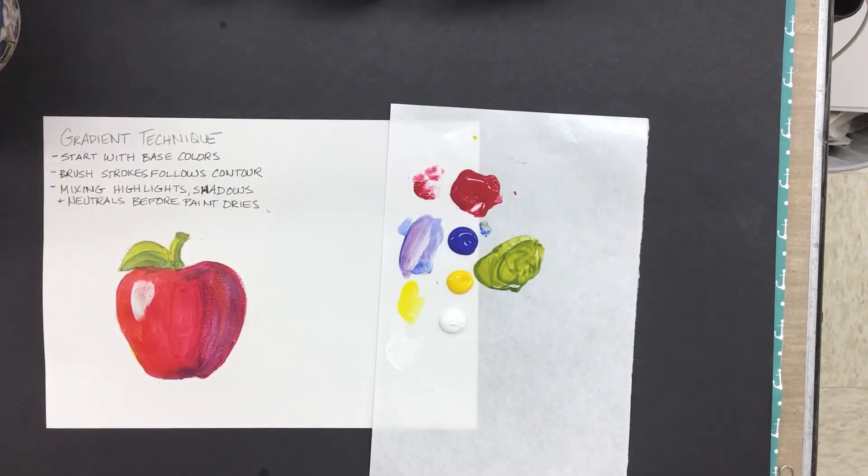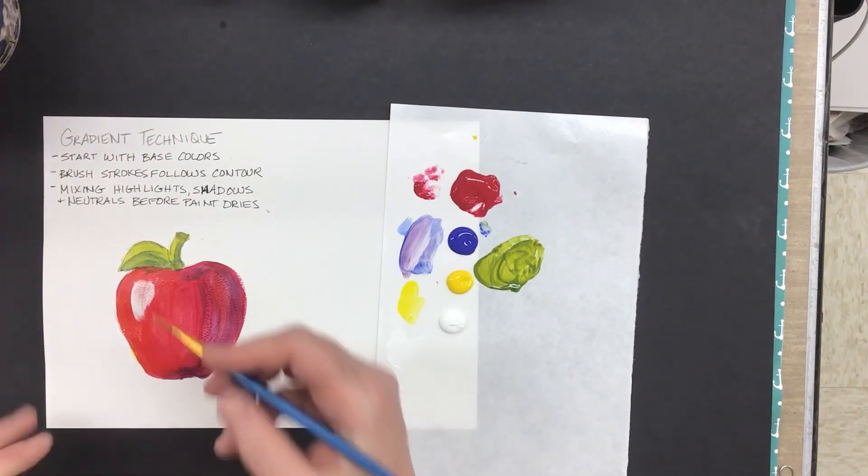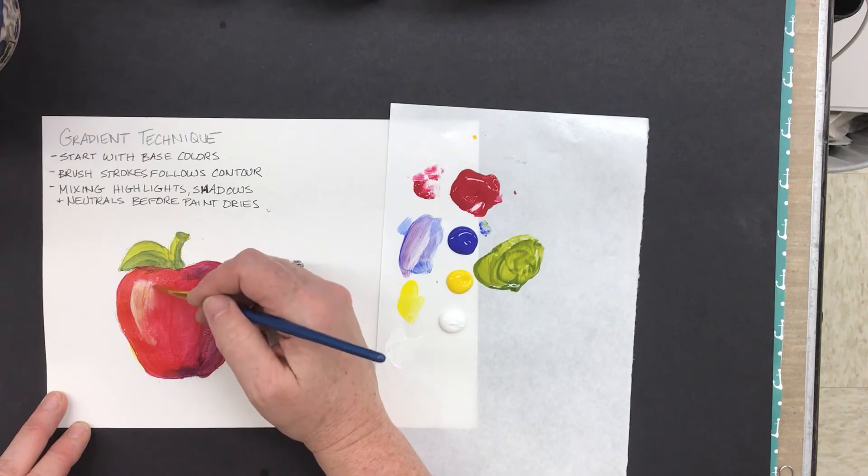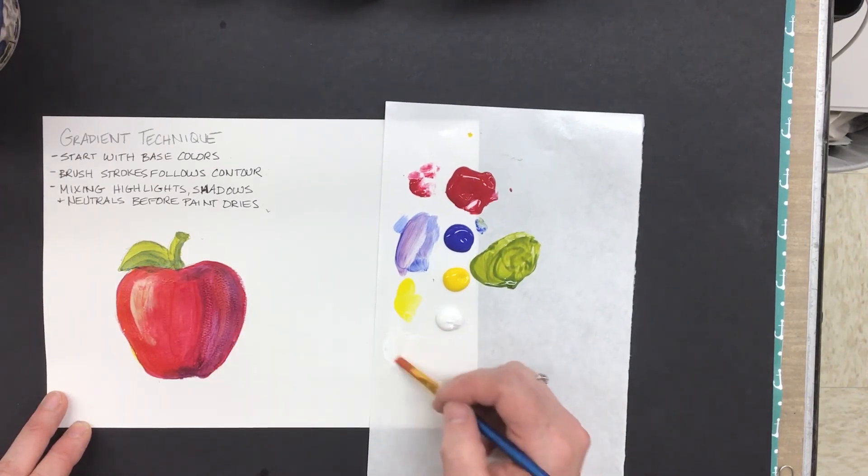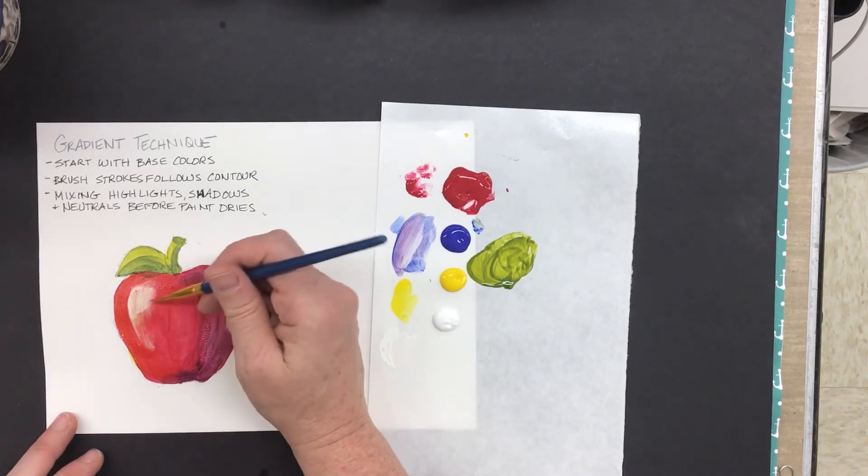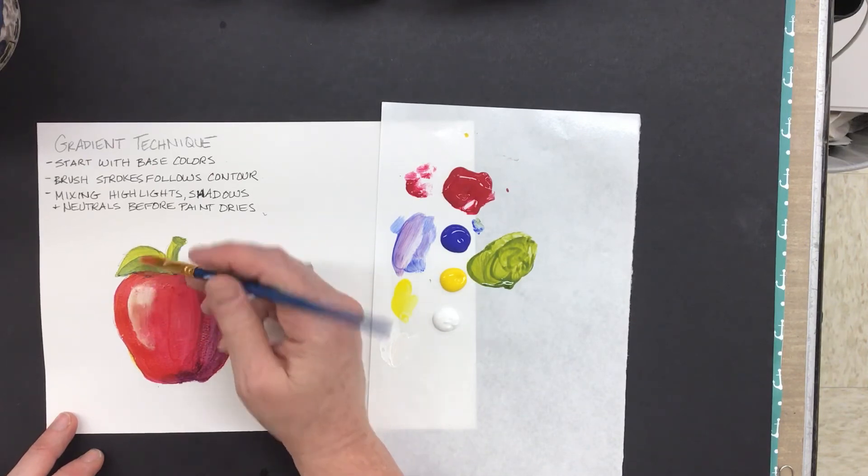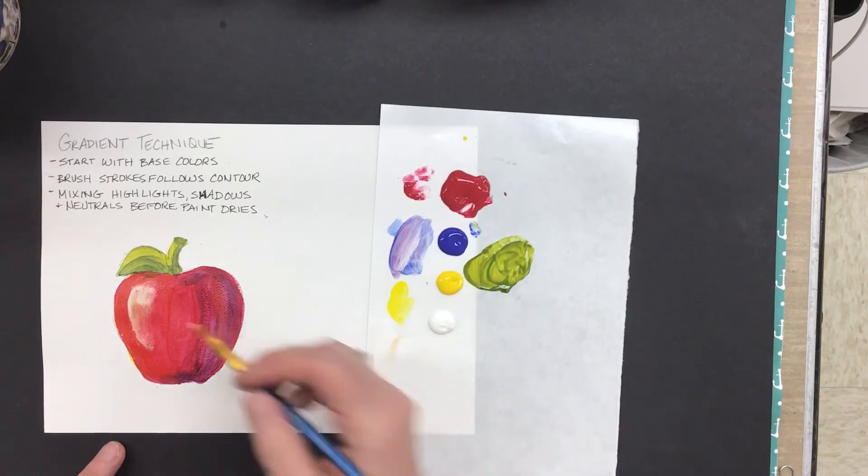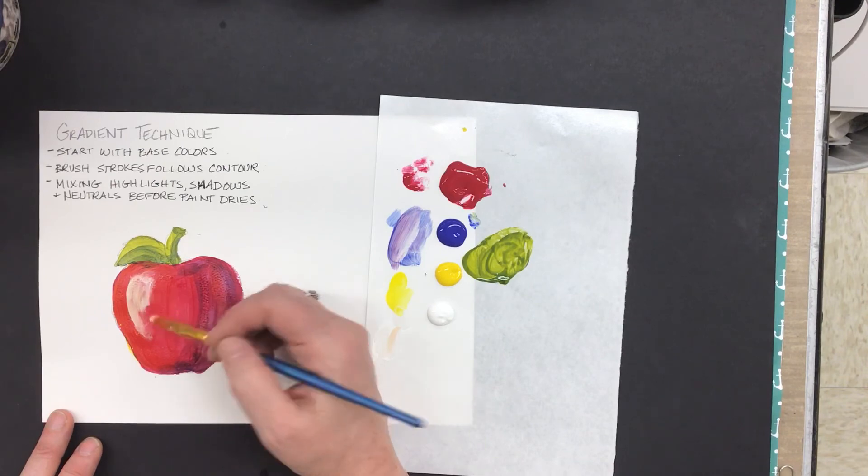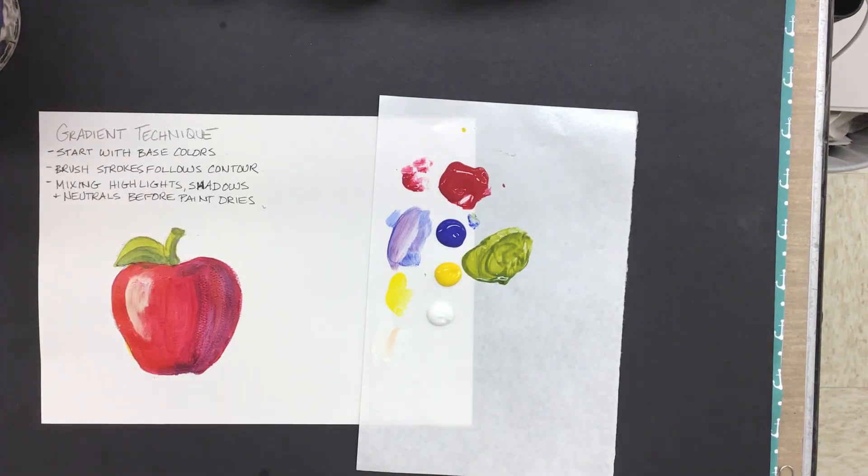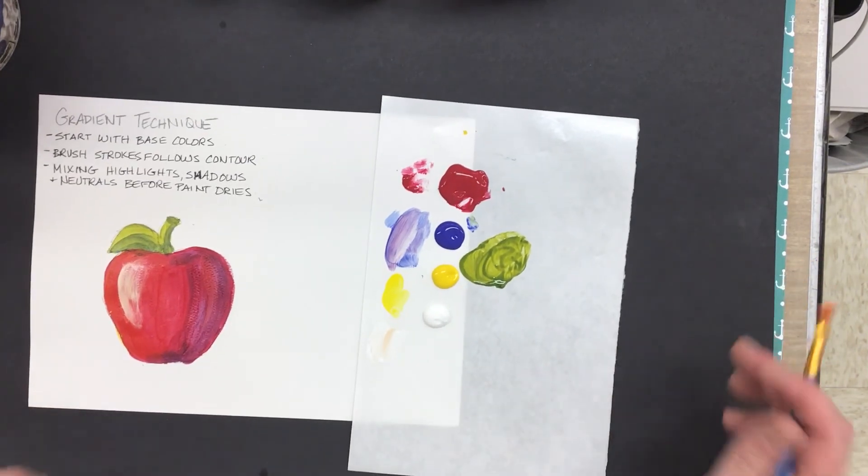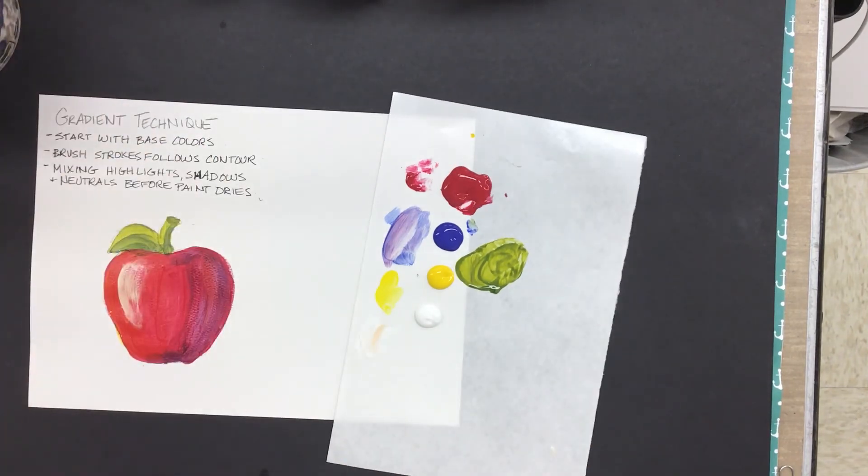All right, so I'm going to add my highlight here, and then I'm going to clean my brush and I'm going to just dry brush it in, again following the contour, blending as you go. If it's not getting bright enough, you can wait for that area to dry, go work on something else, and then come back to it with another layer of highlight. Okay, but that would be an example of gradient painting technique.